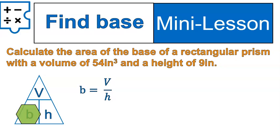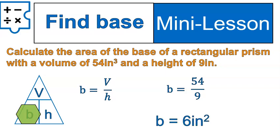Because we're looking for the base, you would cover the base with that hexagon there — volume divided by height. Let's go ahead and set that up: 54 divided by 9, and that equals 6. Because it's calculating an area, it's going to be 6 square inches.